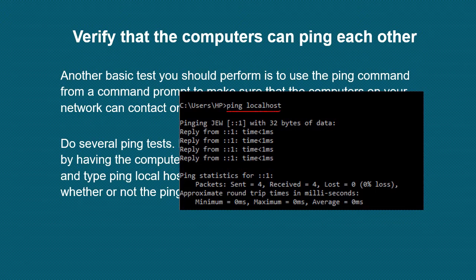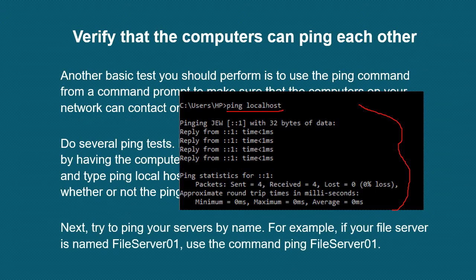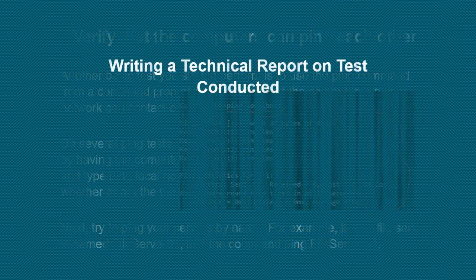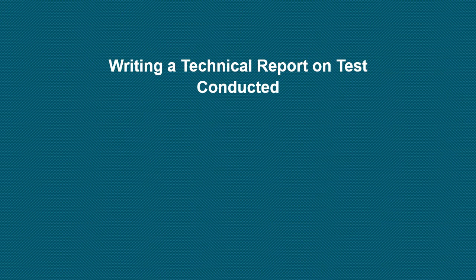Type ping localhost, and it will show the output here. This means that you were able to ping on the network. After that, you can also try to ping your servers by name — just type ping followed by the server name.